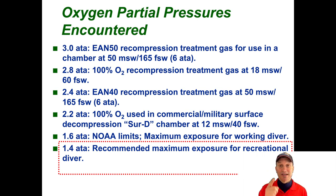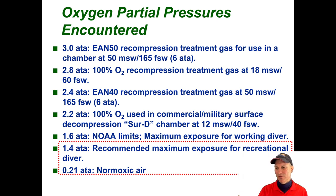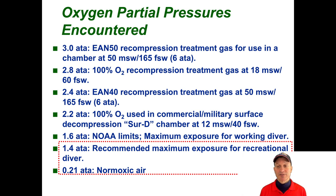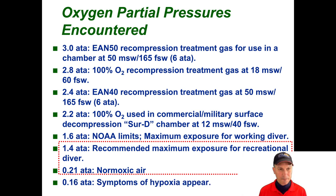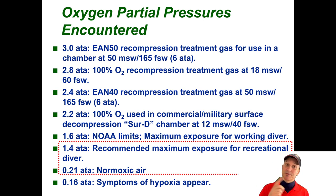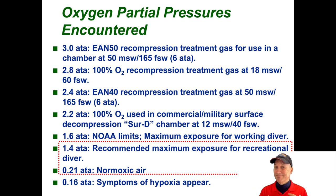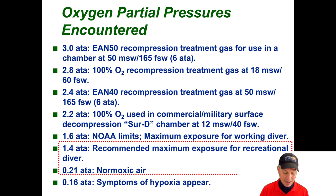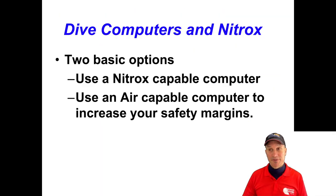For normal Nitrox, it's 1.4 ppO2 max. At 0.21 — one atmosphere — that's normoxic air at sea level. At 0.16 ppO2, which is 16% at one atmosphere, is where you start to have trouble. If you're underwater, these values have to be calculated at your actual pressure.